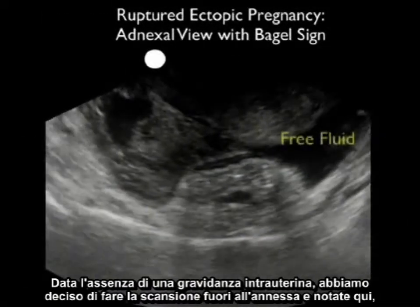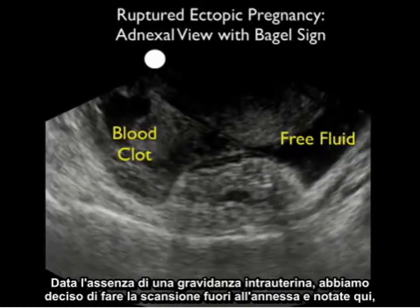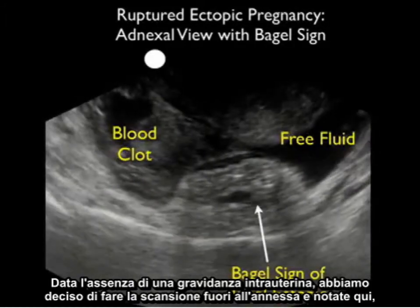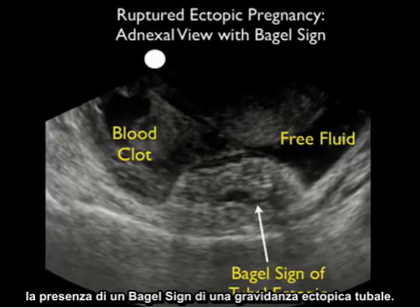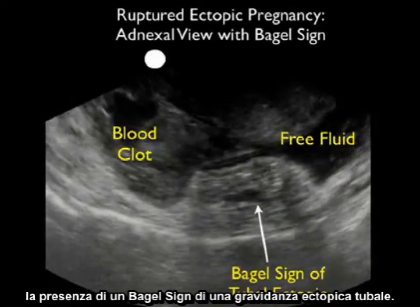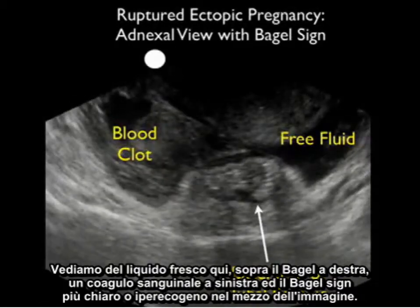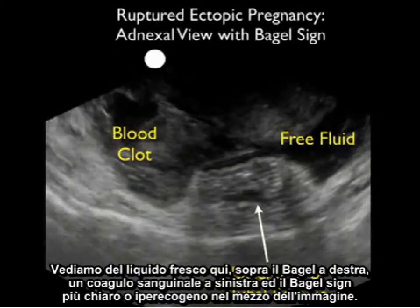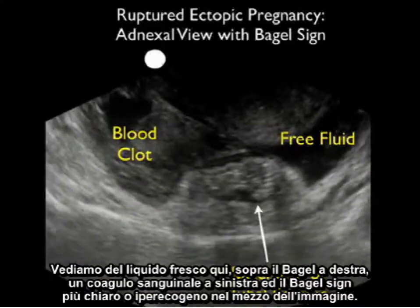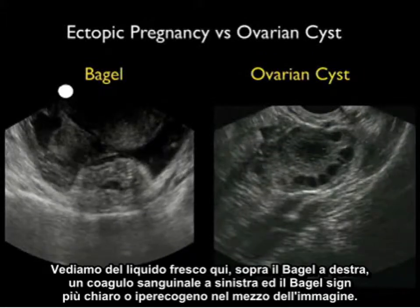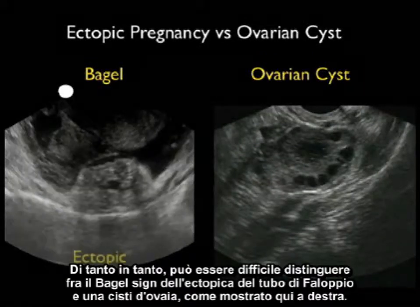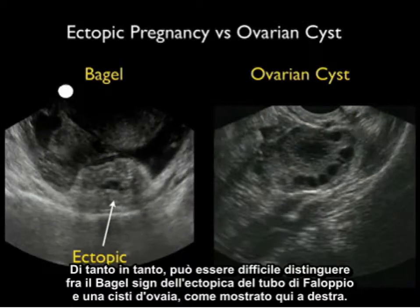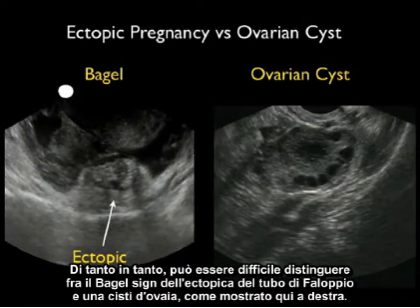Given the absence of an intrauterine pregnancy, we decided to scan out to the adnexa, and notice here the presence of a bagel sign of a tubal ectopic pregnancy. We see fresh fluid above the bagel to the right, blood clot to the left, and the more hyperechoic or lighter bagel sign in the middle of the image. It can occasionally be difficult to discern the bagel sign of a fallopian tube ectopic from an ovarian cyst, as shown here to the right.